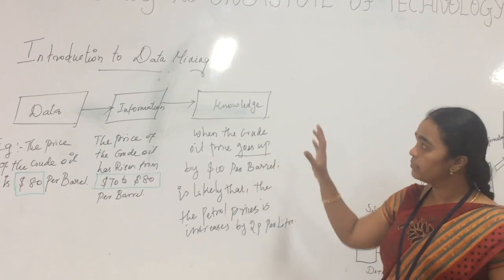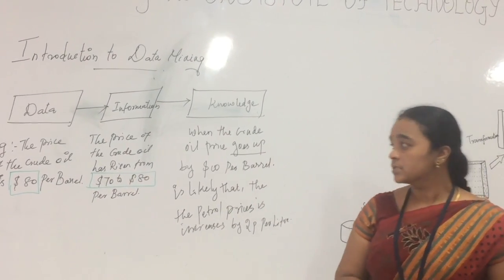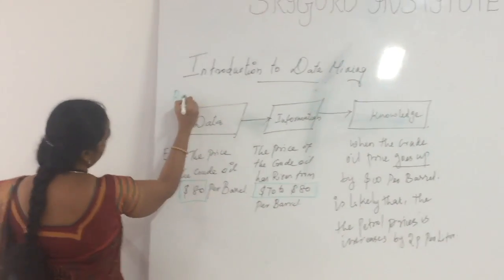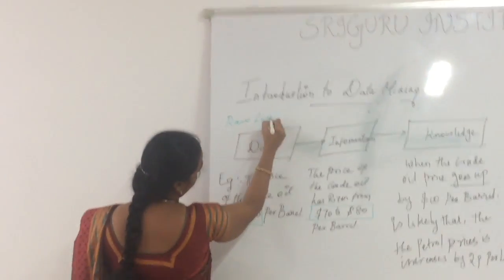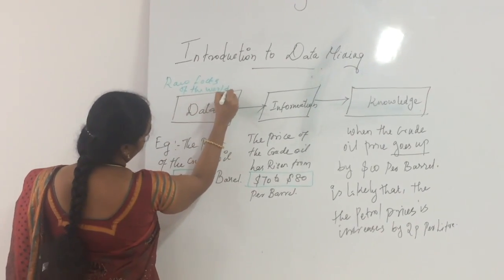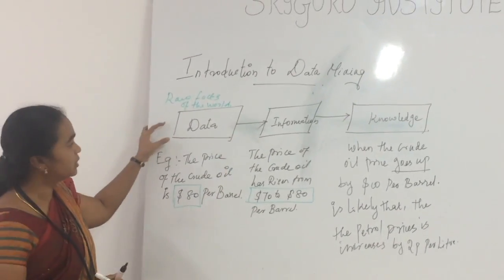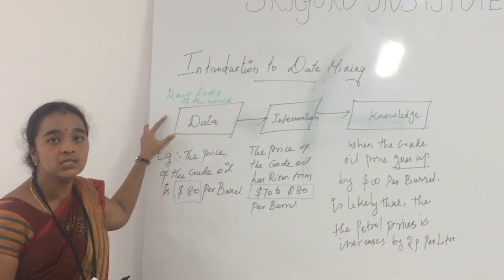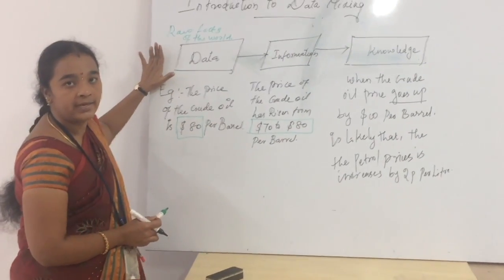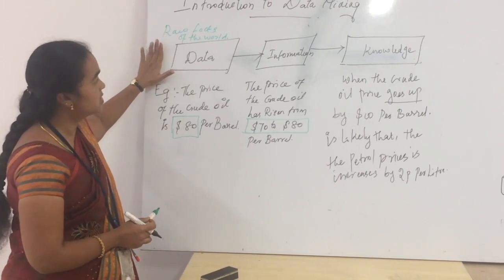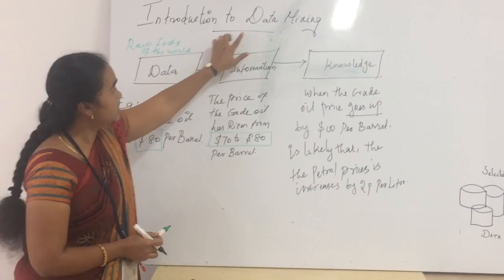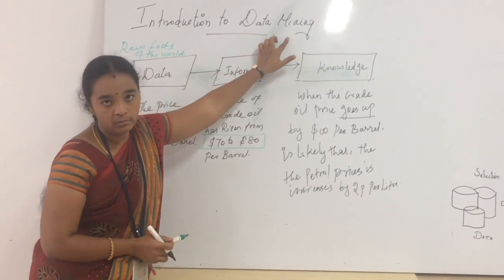The main thing to consider here is that data is the raw facts of the world. We get information from data, and we get knowledge from both data and information. So we have seen the concepts: what is data, what is information, and what is knowledge. Next, we will move on to the mining case.